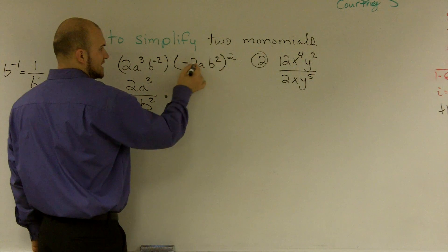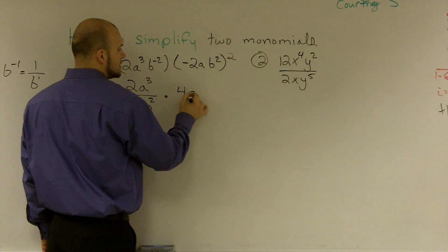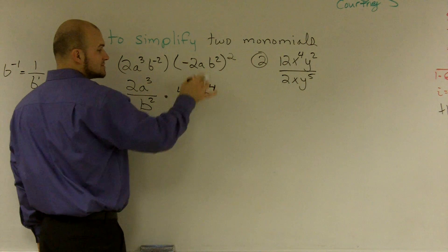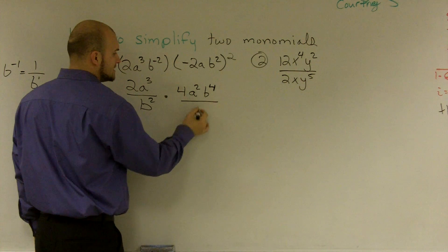So this actually becomes negative 2 squared becomes a positive 4, a squared, and that's b to the 4th. Remember, that's 2 times 2 is going to give me b to 4th. I'm not adding the exponents.